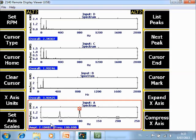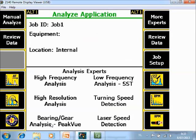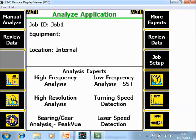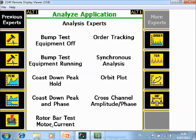Now, let's collect the same data with Synchronous Analysis. I go to the back. I go to the home screen of the CSI 2140 Machinery Health Analyzer. I go to Advanced Analyze. I go to F7 More Experts and here F9 Synchronous Analysis.